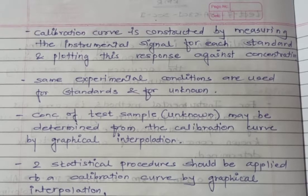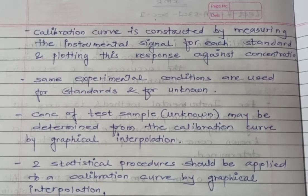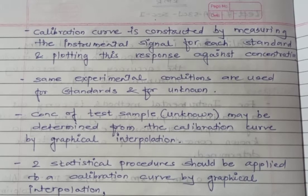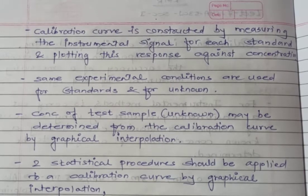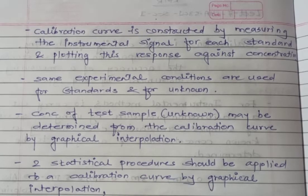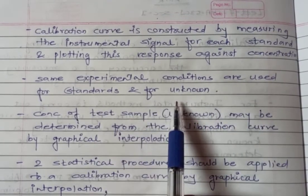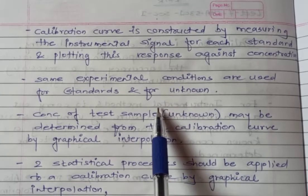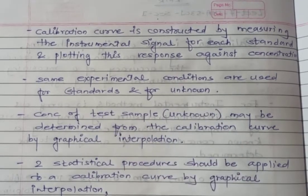That means y is directly proportional to x. You then put one unknown solution into the instrument and measure its signal. The absorbance or percent emission intensity observed on the flame photometer is read on the y-axis, and by interpolation of the line you can identify the concentration of the unknown substance. The same experimental conditions are used for standards and for the unknown — same environment, same instrument, same solutions — so every parameter is equal for both.